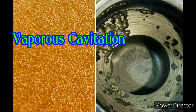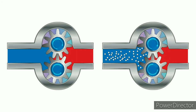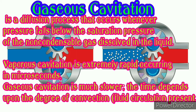Vaporous cavitation is an ebullition process where the bubble grows explosively in an unbounded manner as liquid rapidly changes into vapor. This occurs when the pressure level goes below the vapor pressure. Gaseous cavitation is a diffusion process that occurs whenever pressure falls below the saturation pressure of the non-condensable gas dissolved in the liquid.